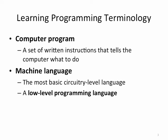To start off, some basic programming terminology. A computer program is a set of written instructions that tell a computer what to do — a set of instructions that tell the computer what to do. Without any help from the programmer, the computer really doesn't do anything. It needs a programmer to write the instructions to tell it what to do.